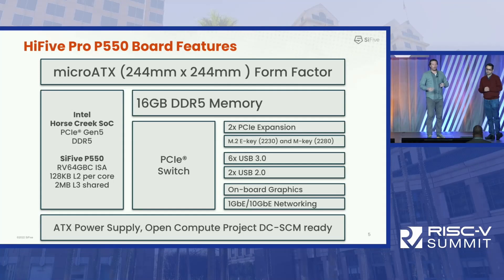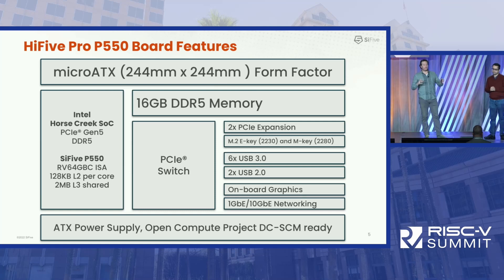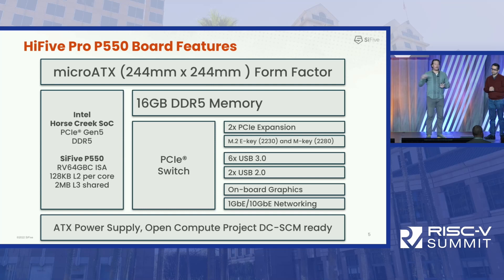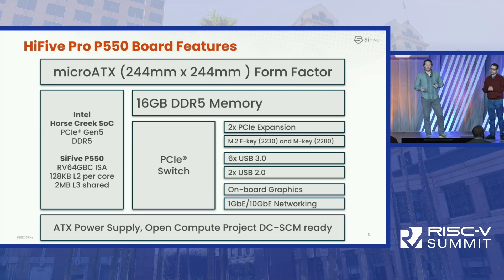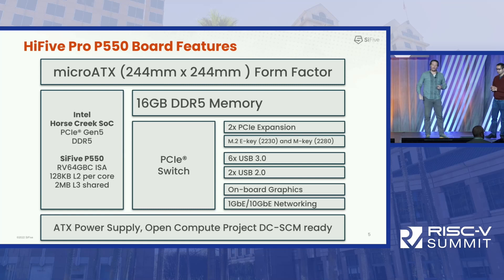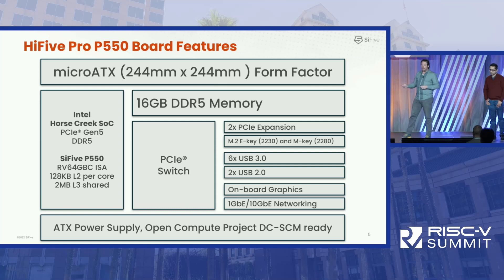Looking at a high-level block diagram of the board architecture, we're fitting this into a micro ATX form factor. At the heart of it is the Intel Horse Creek SoC. We fit that out with 16 gigabytes of DDR5 memory and a PCIe switch for expansion — important for enabling drivers for more cards. The M.2 key slots are important for Wi-Fi networking or NVMe-based storage, and then USB 3 for more expansion, plus onboard graphics and networking.